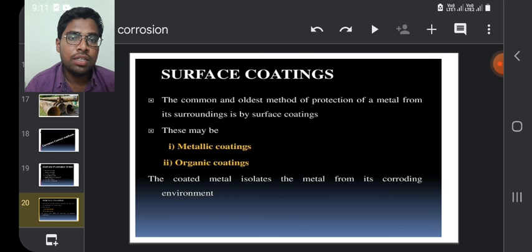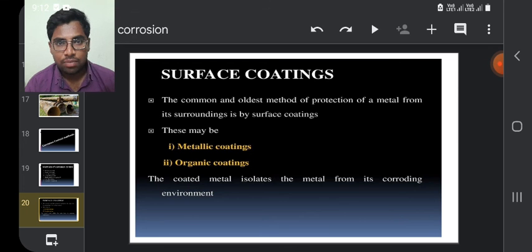Surface coating. The common and oldest method of protection of a metal from its surroundings is by surface coatings. These may be metallic coatings or organic coatings. The coated metal isolates the metal from its corroding environment.